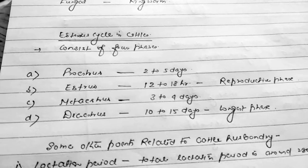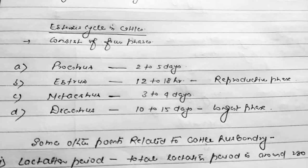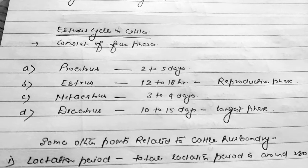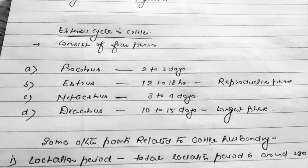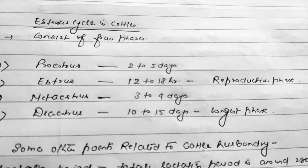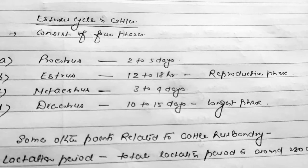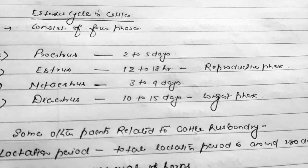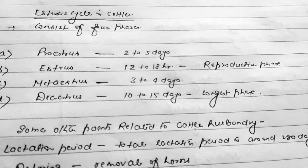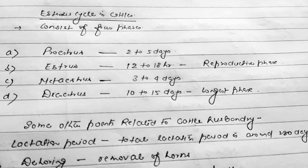The estrous cycle consists of four phases: proestrus, estrus, metestrus, and diestrus. The duration of each phase is important for examinations. Proestrus lasts 2 to 5 days, estrus lasts 12 to 18 hours, metestrus lasts 3 to 4 days, and diestrus lasts 10 to 15 days. The longest phase is diestrus. Estrus is the reproductive phase where the cow receives semen from the bull — it is the phase of mating.